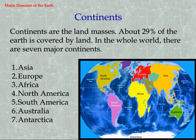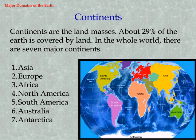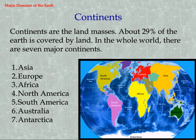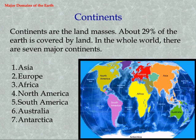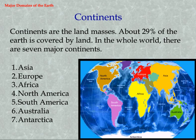The seven major continents are: 1. Asia, 2. Europe, 3. Africa, 4. North America, 5. South America, 6. Australia, and 7. Antarctica.